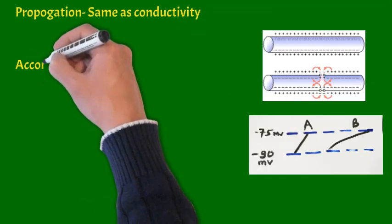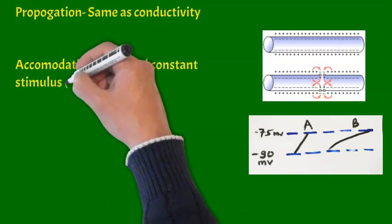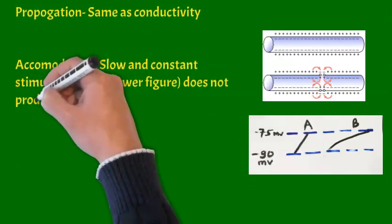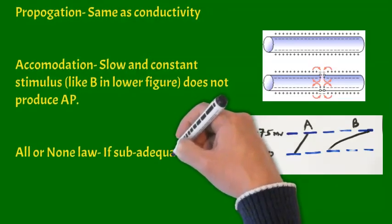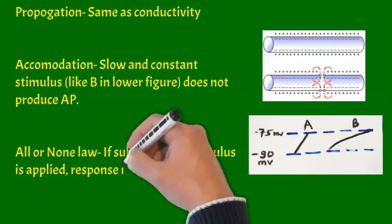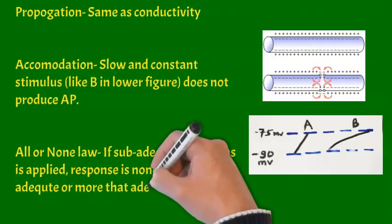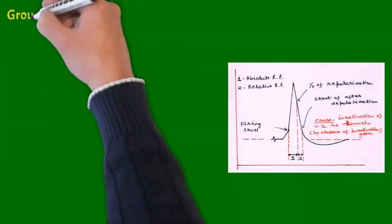Let us see detail. Propagation is same, exactly same as conductivity. Accommodation we can see lower diagram, that is like stimulus B is applied, that is slow and constant stimulus. It will not produce action potential. We need a stimulus like A. And all or none law is if sub-adequate stimulus is applied, response is none, no action potential. While if adequate or more than adequate stimulus is applied, response is all, full-fledged action potential.